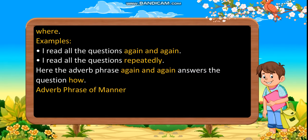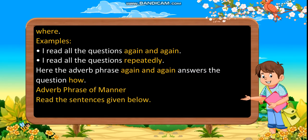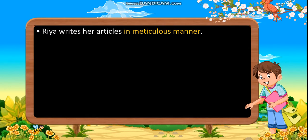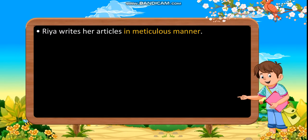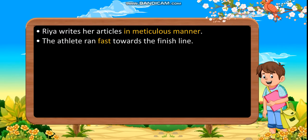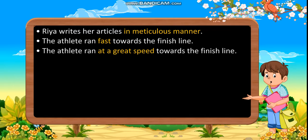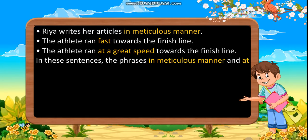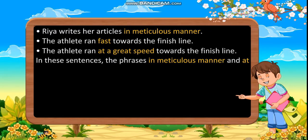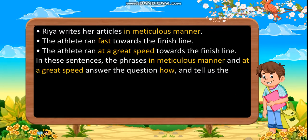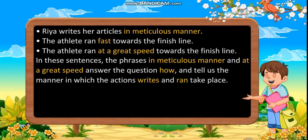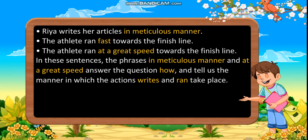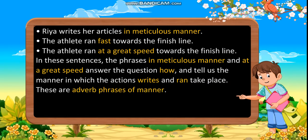Adverb Phrase of Manner. Examples: 'Ria writes her articles meticulously' versus 'Ria writes her articles in a meticulous manner.' 'The athlete ran fast towards the finish line' versus 'The athlete ran at a great speed towards the finish line.' The phrases 'in meticulous manner' and 'at a great speed' answer the question 'how' and tell us the manner in which the actions take place. These are adverb phrases of manner.